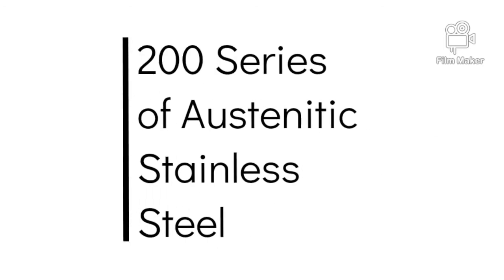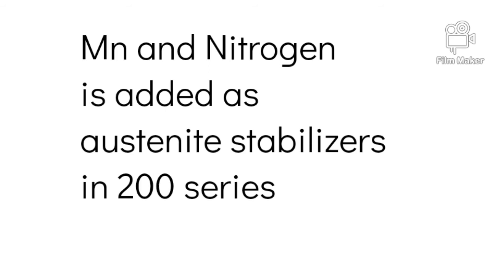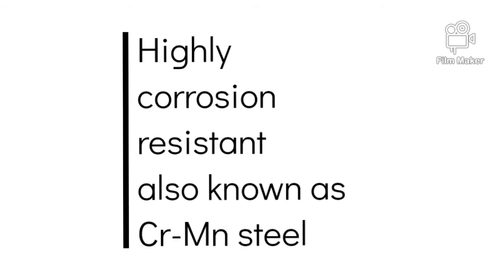Now we are going to discuss the 200 series of steel. In the 200 series, nitrogen and manganese are added as austenite stabilizers along with nickel. This is a class of highly corrosion resistant austenitic stainless steel, also known as chromium manganese stainless steel.